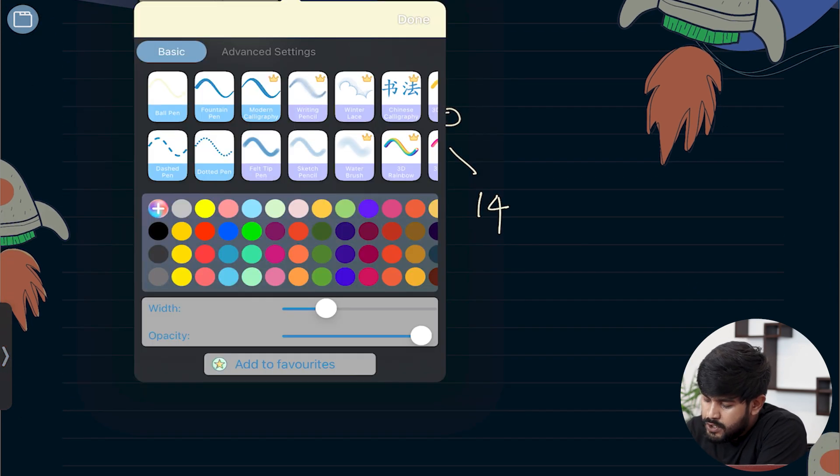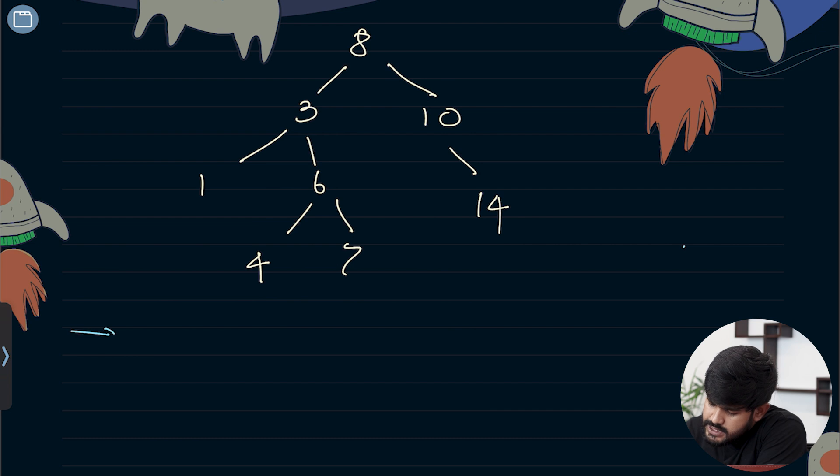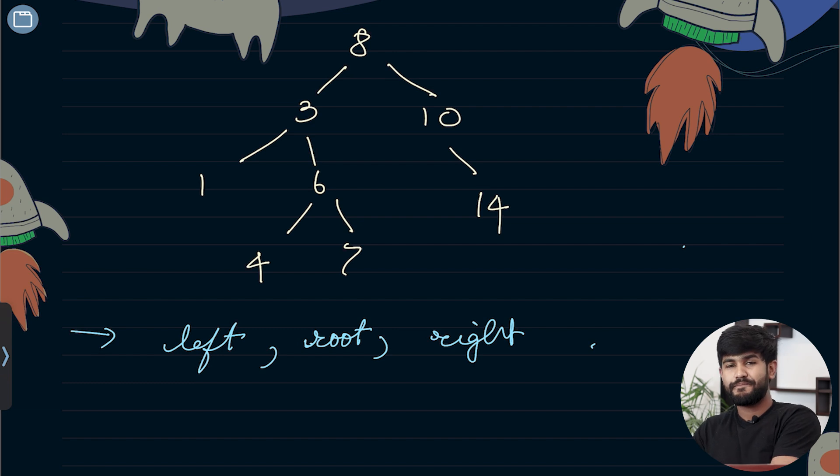So what do you mean by in-order traversal? In-order traversal means we need to visit the left first, then the root, and then the right. How to remember this? Left, root, right. This is how I remember it.